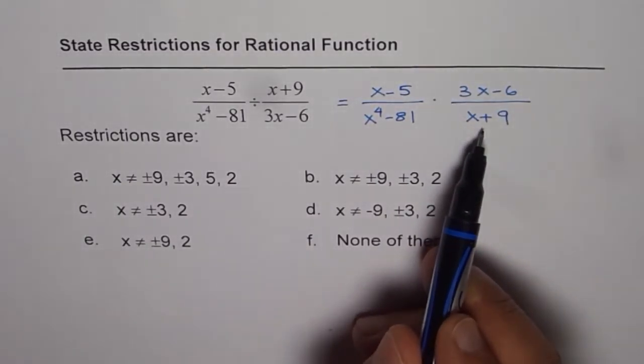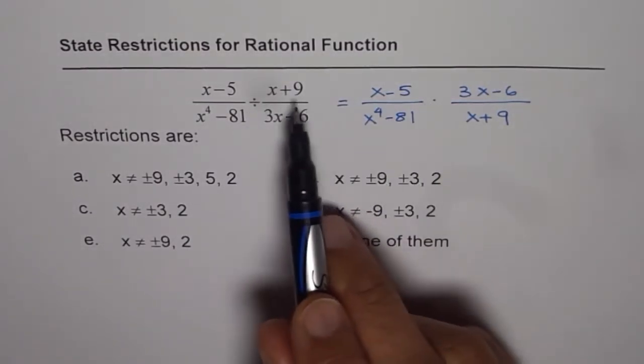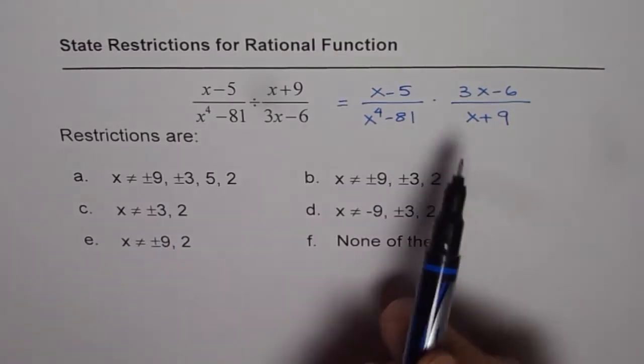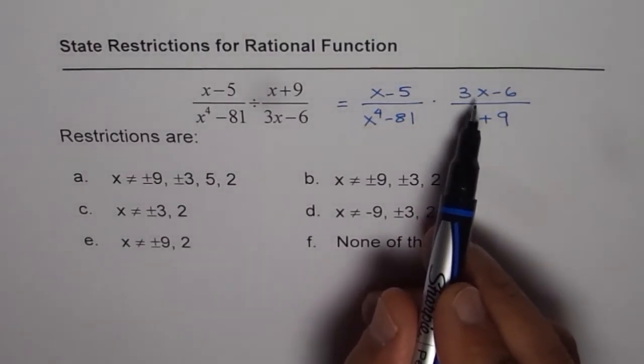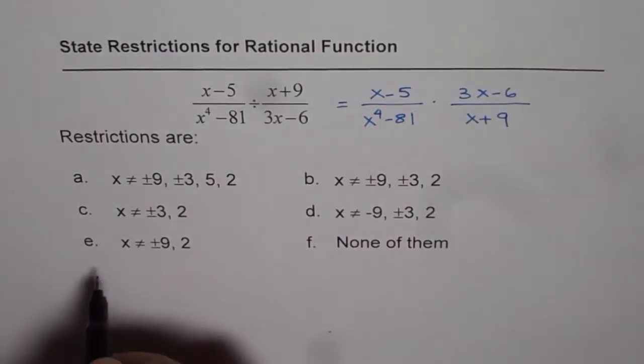Division is the reciprocal of multiplication, so the numerator x+9 comes in the denominator. Therefore, for restrictions, we have to consider both numerator and denominator for the divisor.